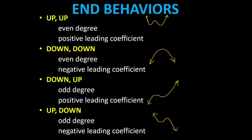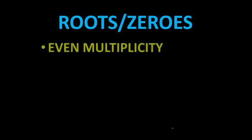Now, to have more explanation on this, let's begin with roots or zeros first. Because when you have an even multiplicity — meaning the root is repeating twice, four times, six times — so the exponent of your factor is even. That's when you say there is an even multiplicity.